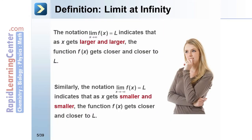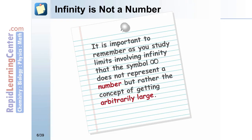The notation — limit as x approaches infinity of f(x) equals L — indicates that as x gets larger and larger, the function f(x) gets closer and closer to some number L. Infinity, however, is not a number. It is important to remember that the infinity symbol does not represent a number, but rather indicates the concept of getting arbitrarily large.